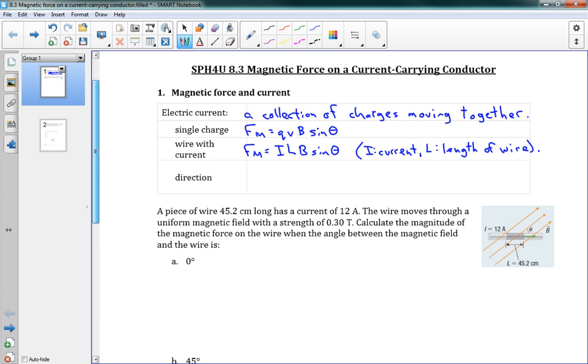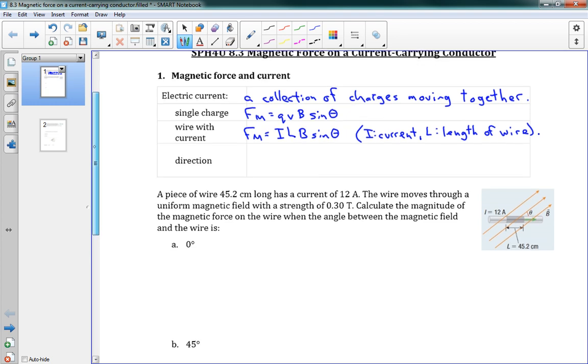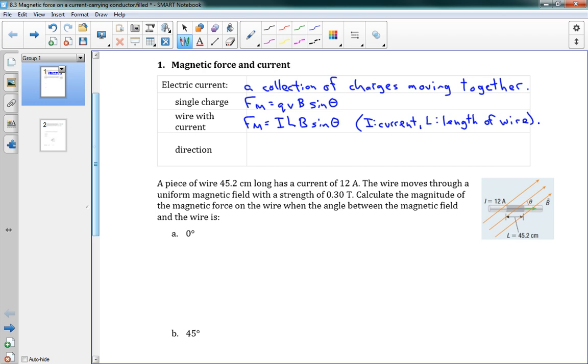And that just means that if we want to look at the charge times its speed, well, it's the same as looking at the current times the length. Because the length, the current times the length, we'll look at how much charge we have over that whole length and its speed. So they're very related equations.